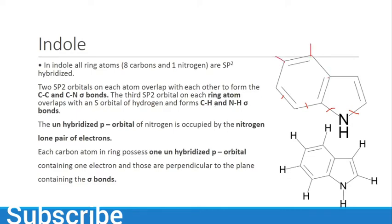The third sp2 orbital on each ring atom overlaps with an s orbital of hydrogen to form C-H and N-H sigma bonds. The hydrogens present on each carbon and nitrogen form these sigma bonds.